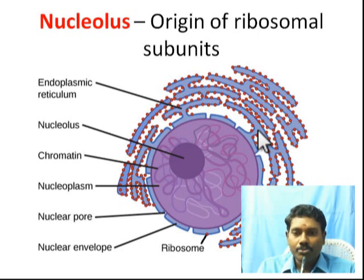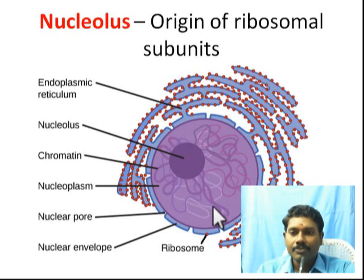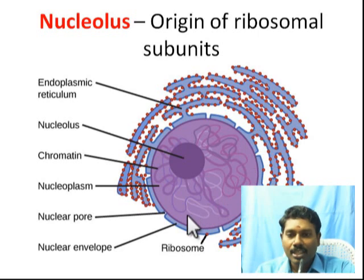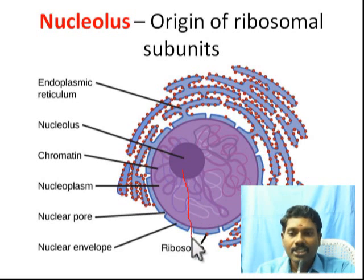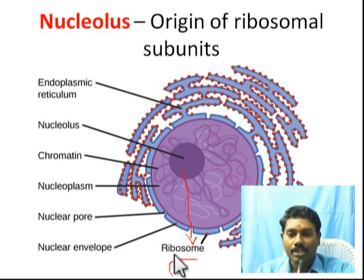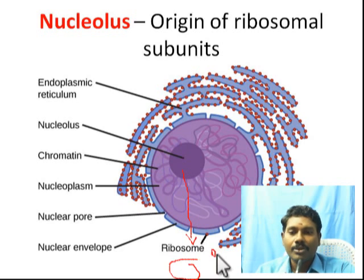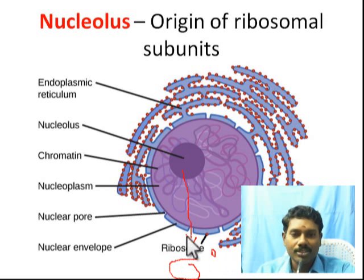In eukaryotes, there is correct segregation. The ribosome subunits pass through the nuclear pore and move towards the cytoplasm. In the cytoplasm, there are larger subunits and smaller subunits.